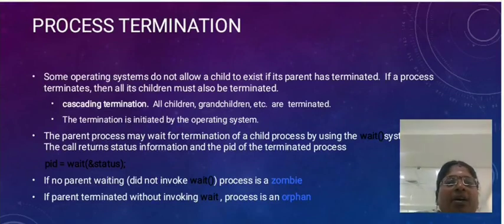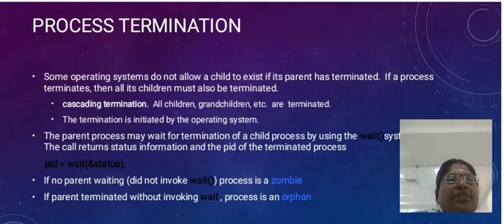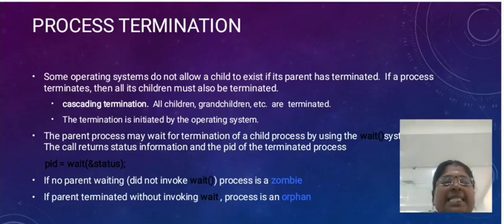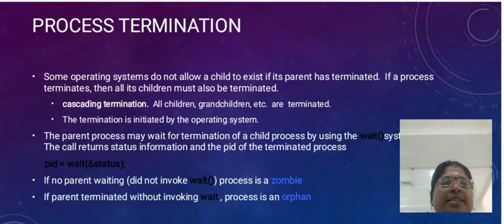Some operating systems do not allow a child to exist if its parent has terminated. If a parent process terminates, then all its children must also be terminated. This is called cascading termination — all children, grandchildren, and all descendant processes are terminated. The termination is initiated by the operating system.